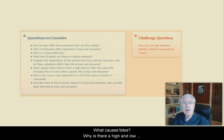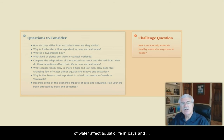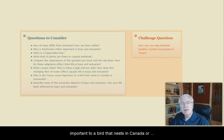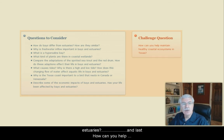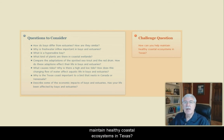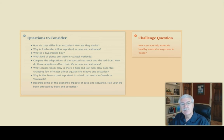What causes tides? Why is there a high and a low tide? And how does the changing flow of water affect aquatic life in bays and estuaries? Why is the Texas coast important to a bird that nests in Canada or Venezuela? Describe some of the economic impacts of bays and estuaries. Has your life been affected by bays and estuaries? And last, how can you help maintain healthy coastal ecosystems in Texas?